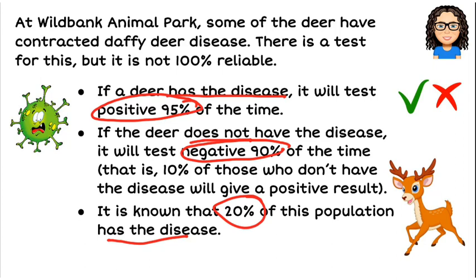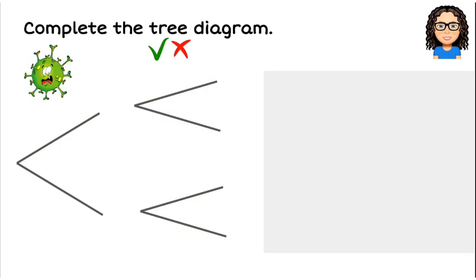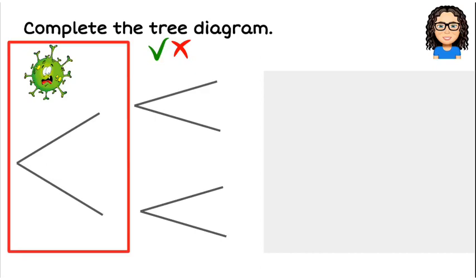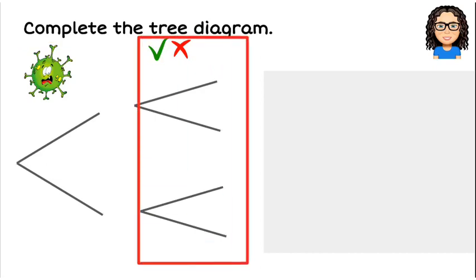So if we look at those pieces of information, we've got information about whether they've got a disease or not, and we've got information about whether they would test positive or negative. Those are your two variables, or the two layers that we are going to have in our tree diagram. First the deer itself either contracts the disease or it doesn't, and then the farmer will test that deer and the test will come back positive or negative. So the first layer of the tree is about whether or not the deer has the disease, and the second layer is whether or not the test is positive or negative.